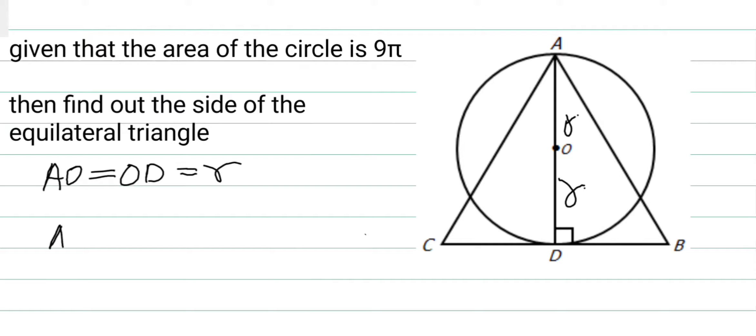The circle is πR², so this is 9π. After simplifying, we get R equals 3.